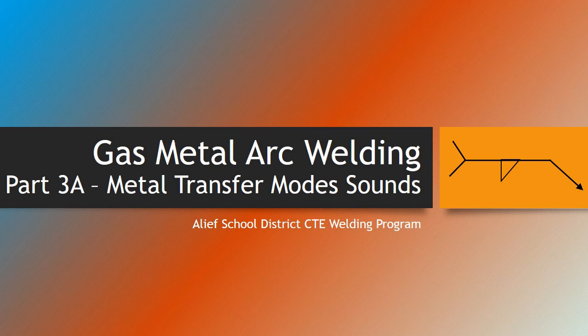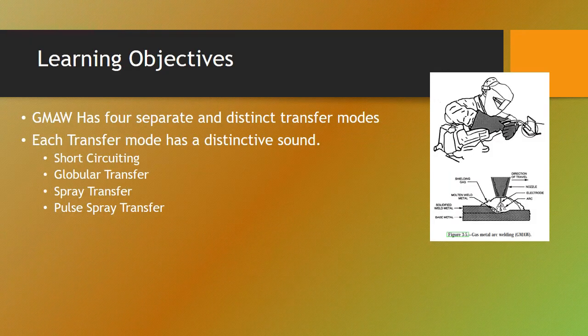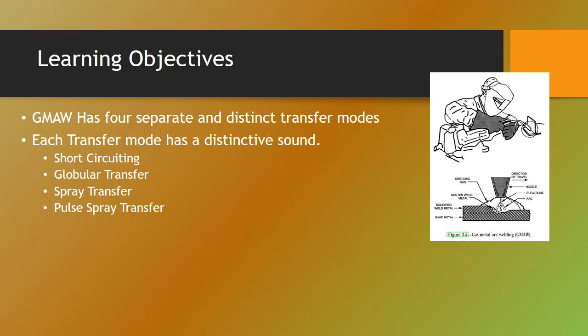Gas metal arc welding, a Leaf School District CTE welding program, part 3A: metal transfer modes and sounds. We're going to talk about sounds today and the distinctive sounds that each gas metal arc welding transfer mode makes. As we discussed before, there's four separate and distinct transfer modes, but one of the best ways to tell them apart is by sound. I can walk through a shop and tell the different modes apart just by the sounds. Each transfer mode has a distinctive sound, so we're going to listen to a little clip of short-circuiting, globular transfer, spray transfer, and pulse spray transfer and try to pick out the differences.